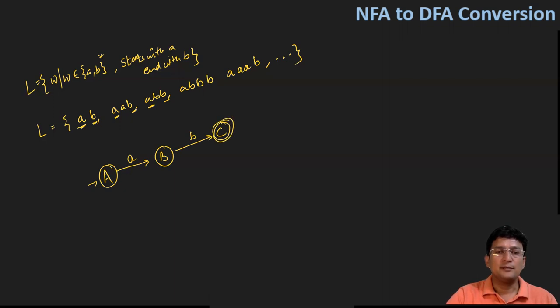C should be the final state. In between if I get A or B, I don't mind. So it should start with A and it should end with B. So this is the simplest possible NFA for this.